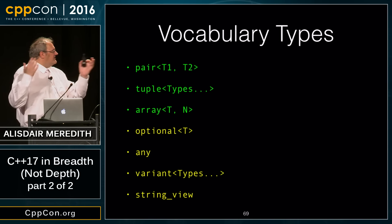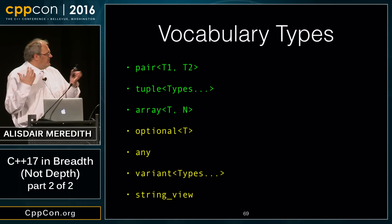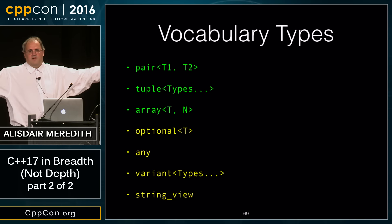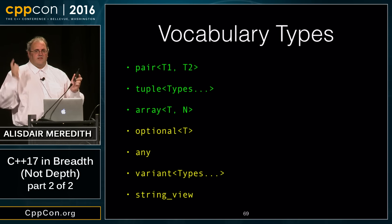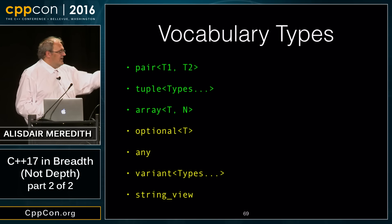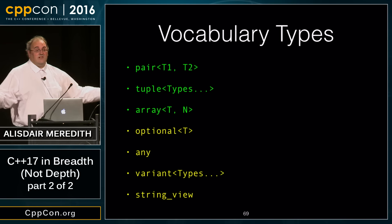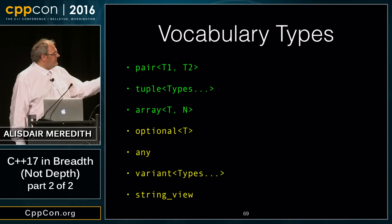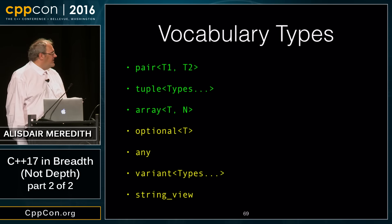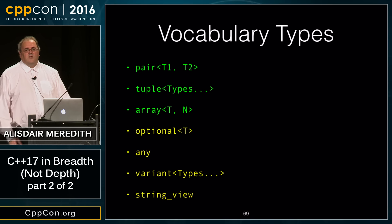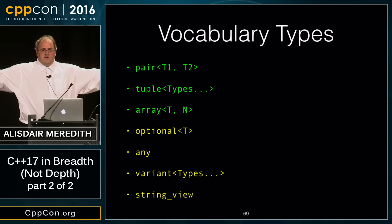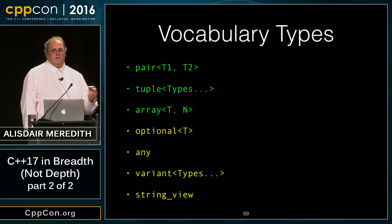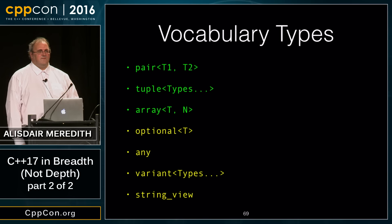std::variant holds one of a sequence of types and can tell you which one it's holding — unlike any, which can hold anything but doesn't tell you which type. std::string_view is a reference into a string that doesn't own the string; it's much more lightweight for passing around in interfaces.